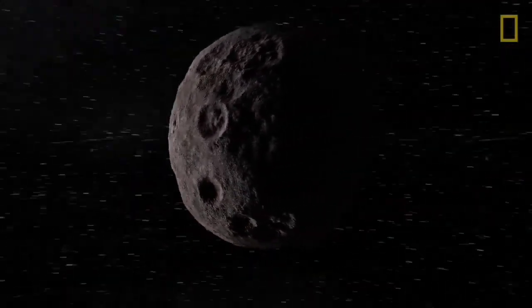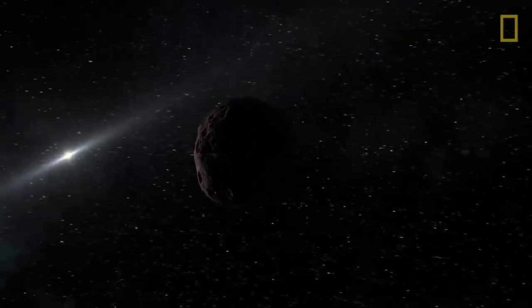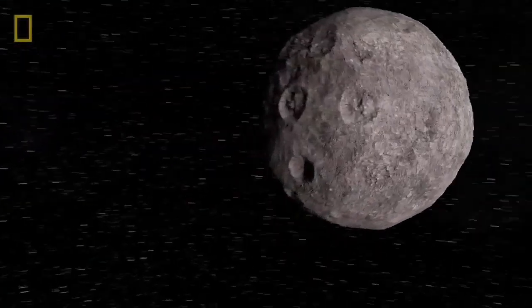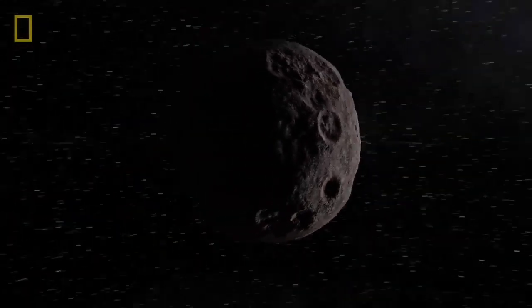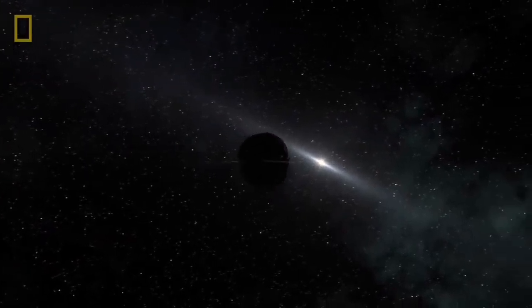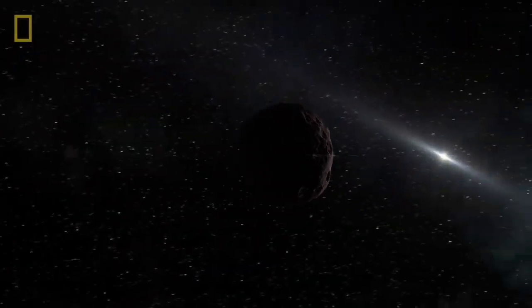Hence, every new object that scientists find in space in the solar system, if it looks like a planet, then they look at its characteristics. And if it does not have all the three characteristics of a planet, then they put it in the group of dwarf planets.